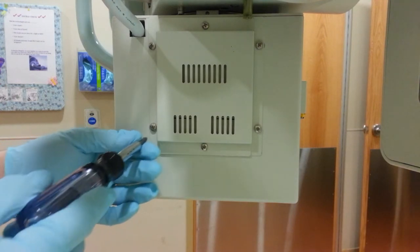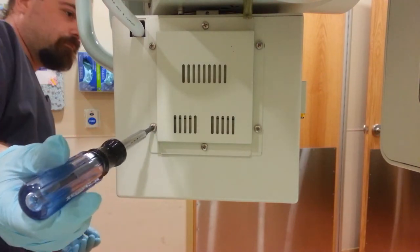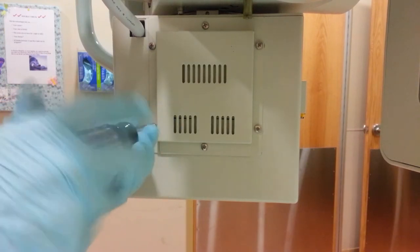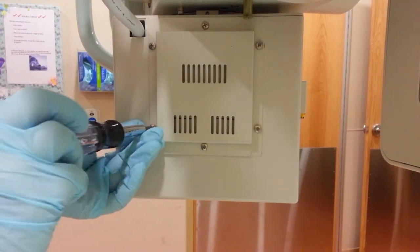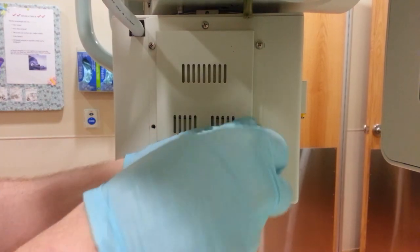This is how to remove a light bulb from a Shimadzu x-ray machine. I'll go ahead and remove the screws from the housing here, located on the side of the body.